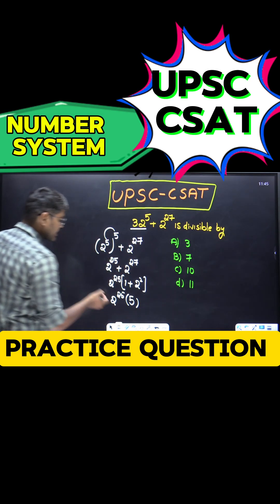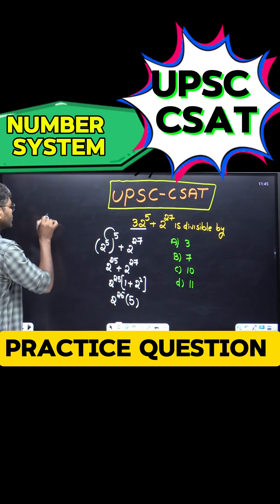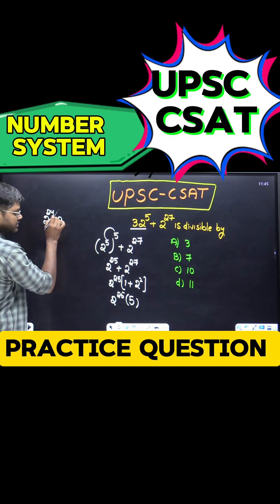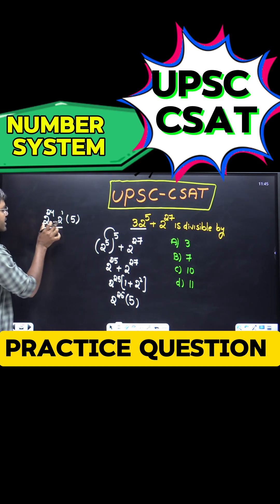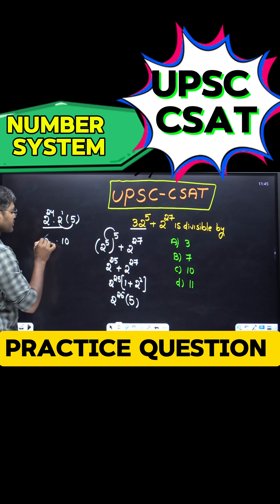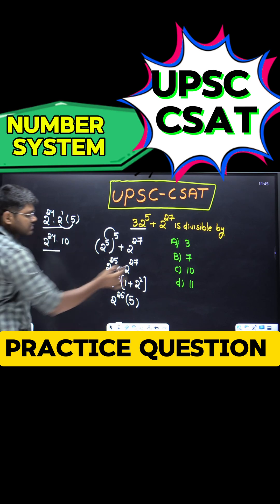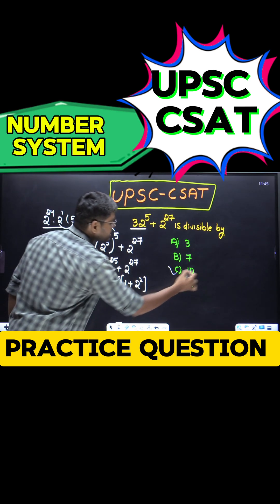Again, we can write this as 2^24 × 2^1 × 5. This is in the form a^m × a^n = a^(m+n). So 24 + 1 equals 25. So 2 × 5 = 10 × 2^24. Now check, this number is divisible by 10.